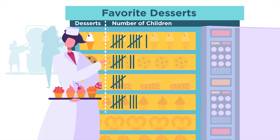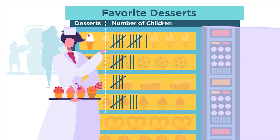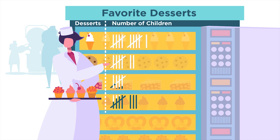The right side of the chart shows the data that was collected. It shows how many people chose each type of dessert. Instead of showing numbers, it uses tally marks.